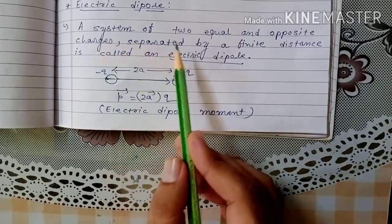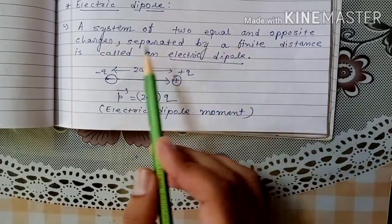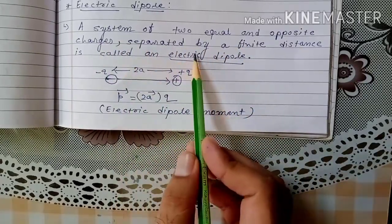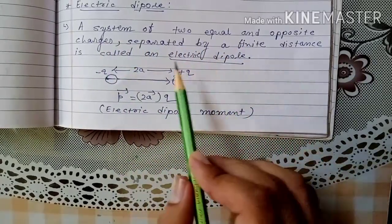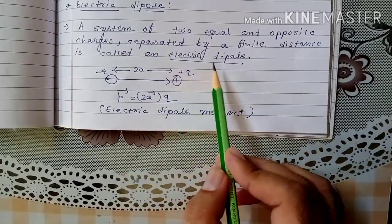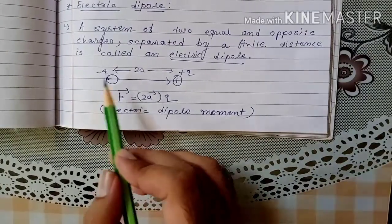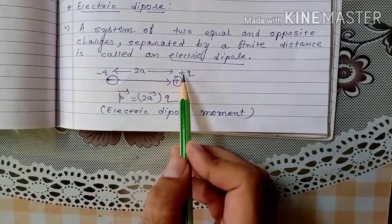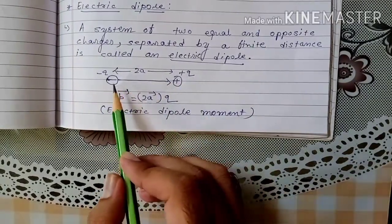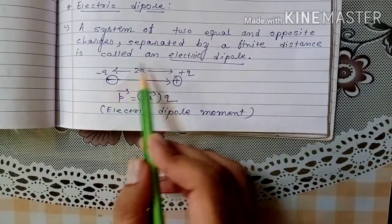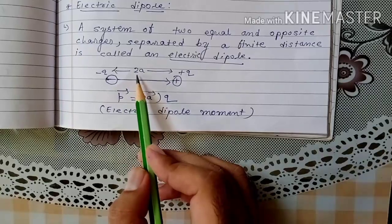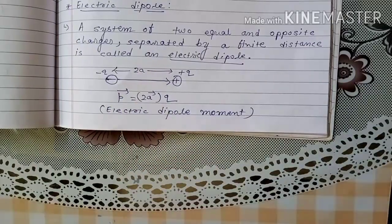A system of two equal and opposite charges separated by a finite distance is called an Electric Dipole. Here minus Q and plus Q charges are separated by a distance of 2a.